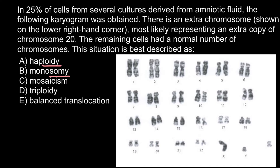Another variant would be trisomy. As you know, people who have an extra chromosome 21 — this is Down syndrome. It is very bad for our health if we miss one chromosome or have an extra chromosome. Monosomy is when in a pair of chromosomes one is missing, and trisomy is when there is an extra copy of the chromosome — but only in one pair.